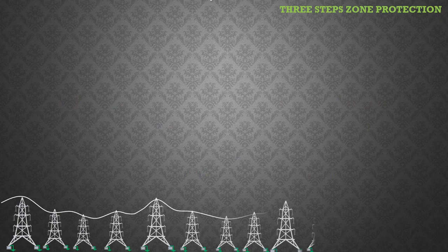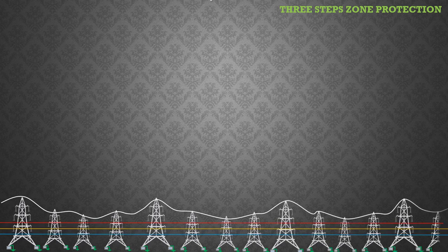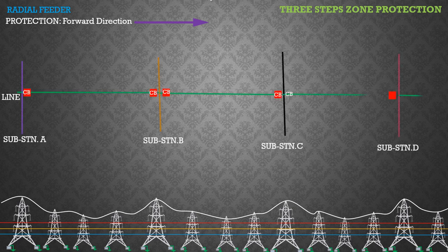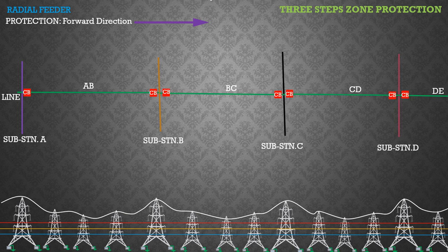For convenience and better understanding, we assume substations are getting power through a radial feeder and protections are involved in the forward direction. The line between substation A and substation B is AB, between substation B and substation C is BC, and between substation C and substation D is CD — all protected by distance protection relays.